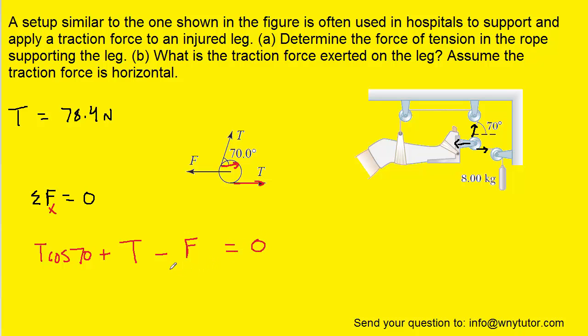We can solve this equation for F by adding F over to the right side. And then we can plug in the known value for the tension T, which we found in part A as 78.4 newtons. And when you add the left-hand terms together, you should get a force roughly equal to 105 newtons. So this would be the correct answer to part B of the question.